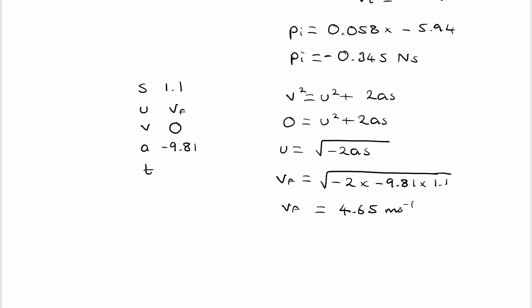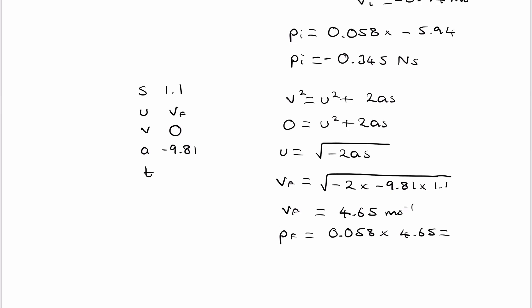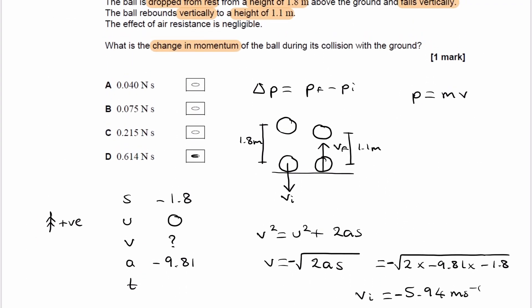And then we can work out the momentum. The final momentum would be 0.058 times 4.65, which is 0.270. Now change in momentum is equal to final momentum minus initial momentum, which is 0.27 minus minus 0.345. That's just these two numbers here and here taken away from one another. pf minus pi. And this gives us 0.615 Newton seconds, which is close enough to D.